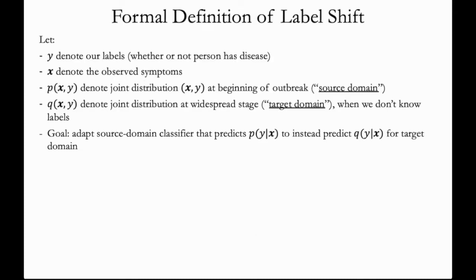We'll begin by formally defining label shift. Let y denote our labels, in this case whether or not a person has the disease, and let x denote the observed symptoms. p(x, y) denotes the joint distribution at the beginning of the outbreak, which we call our source domain, and q(x, y) denotes the joint distribution at the widespread stage, which we call our target domain.